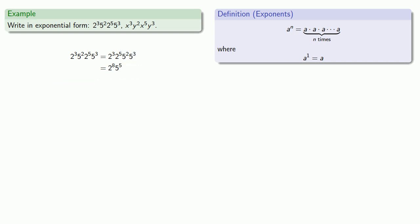And again, nothing important changes if we use x's and y's instead of 2's and 3's. So here we have 3 and 5, 8 factors of x, and 2 and 3, 5 factors of y.